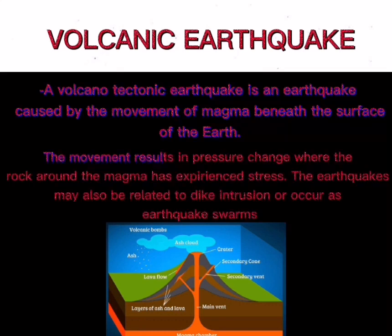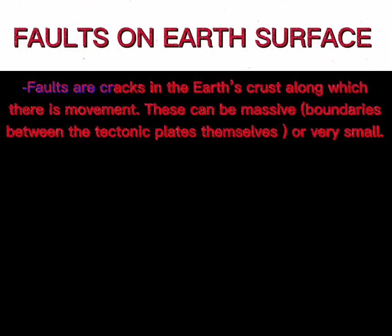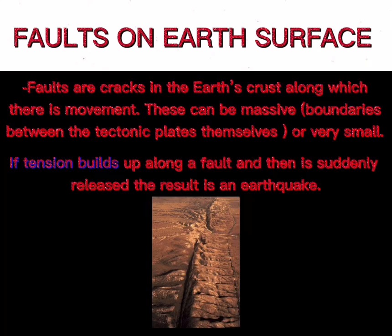The movement results in pressure changes where the rock around the magma experiences stress. The earthquakes may also be related to dike intrusion or occur as earthquake swarms. The second type involves faults on the earth's surface — faults are cracks in the earth's crust along which there is movement, and can range from massive boundaries between tectonic plates to very small ones.